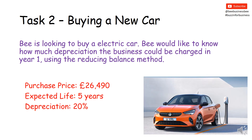So task two. Here is the same car again. Only this time B is going to be looking to use the reducing balance method. The purchase price is £26,490. It's still meant to last for five years, but this time depreciation is at 20%. Using the reducing balance method, calculate the amount of depreciation for year one. Pause the video while you do this and then unpause it to see the answer.